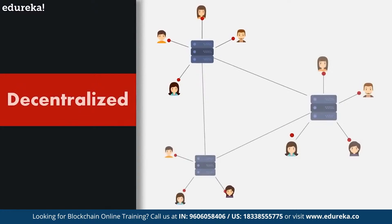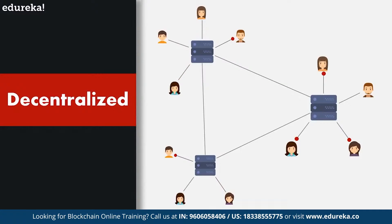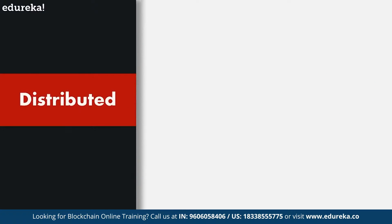A decentralized system is exactly the opposite of a centralized system — it is when a service is ruled by no single governing authority. You're actually using a decentralized system right now: the Internet. Nobody really owns the Internet and nobody is really supervising what websites can or cannot do.